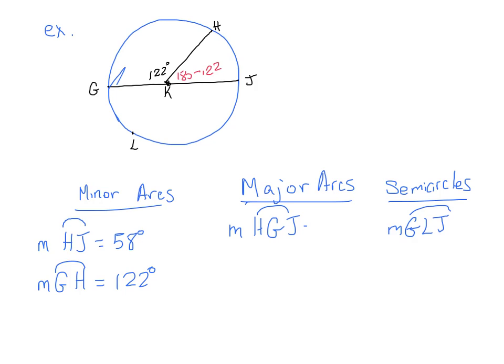Alright. So as far as our major arcs are concerned, we have HGJ. So we already know that HJ is 58. And HGJ is everything else in the circle. So HGJ we can find by subtracting, I'll just write it in here, subtracting 58 from 360. And there are other ways to do it. That's just the way I chose. And so we get that HGJ is equal to 302 degrees.